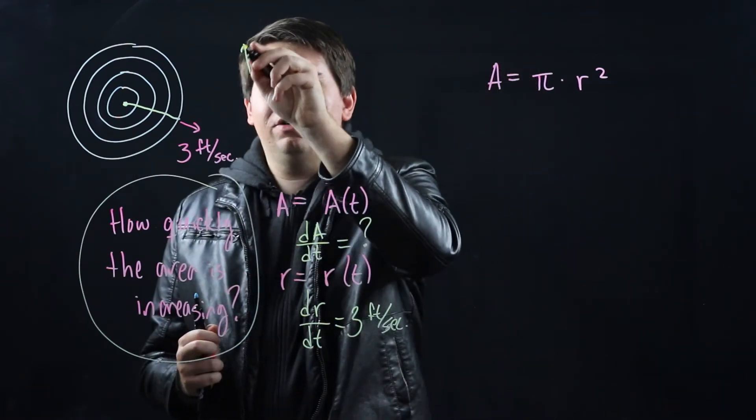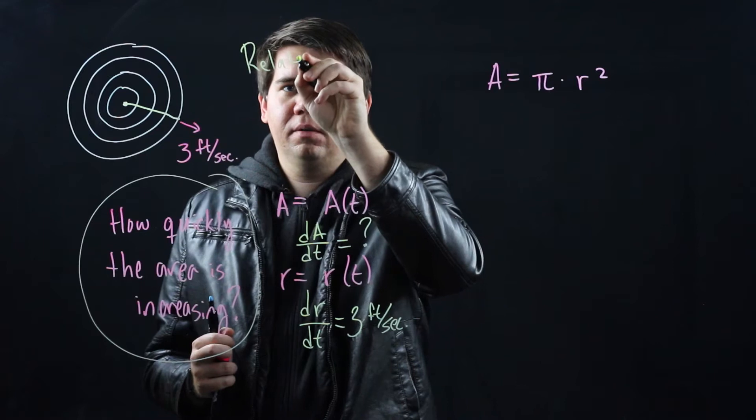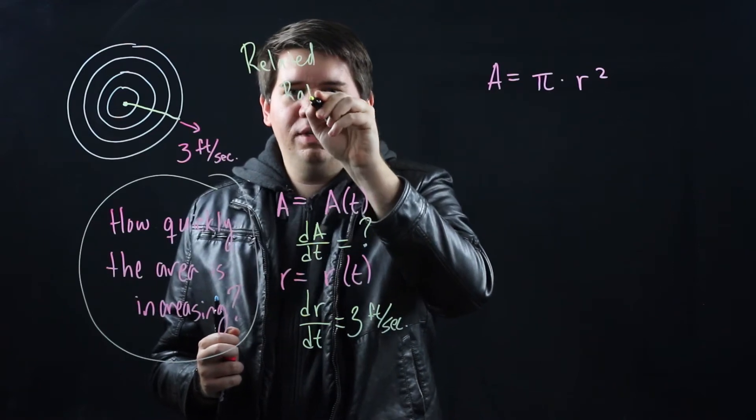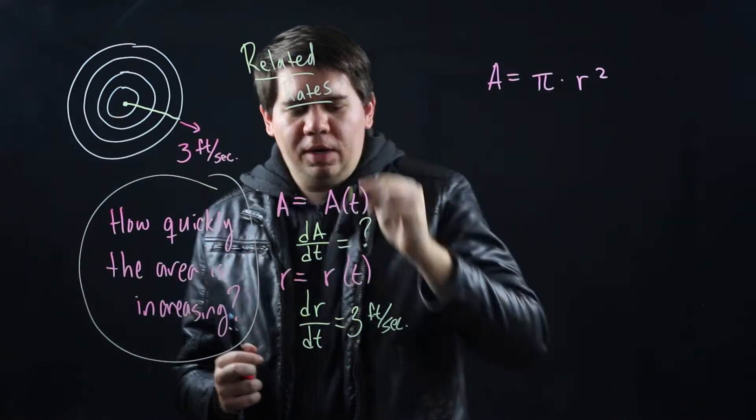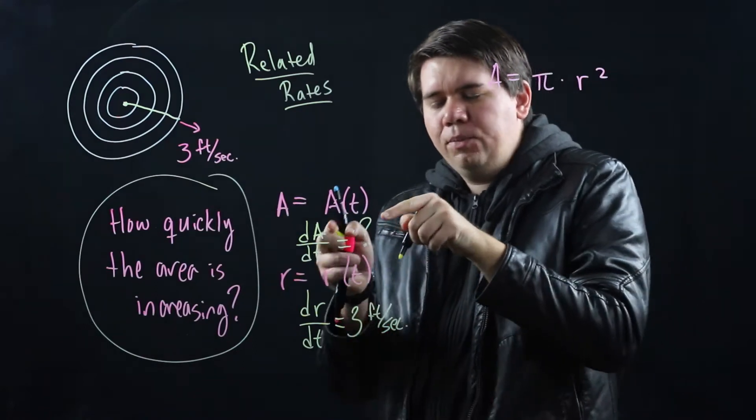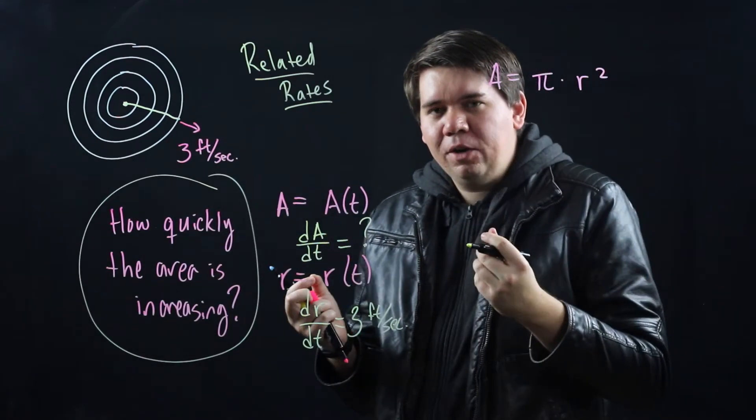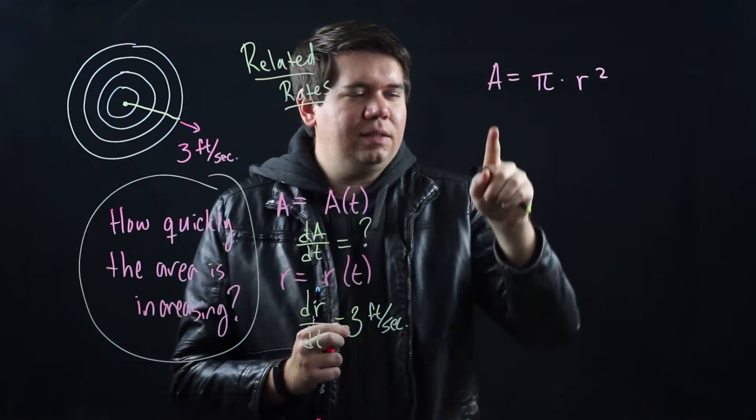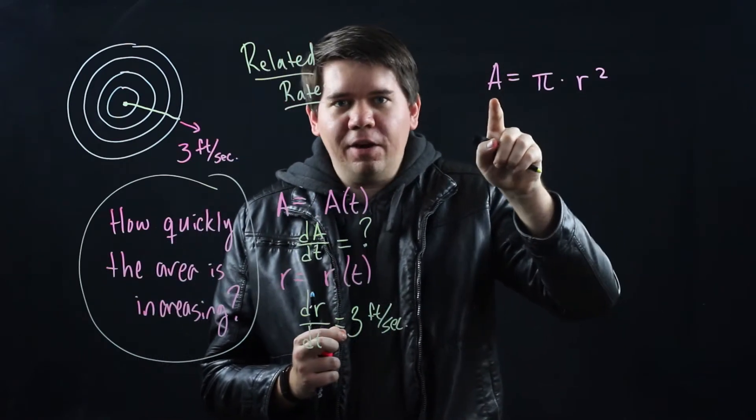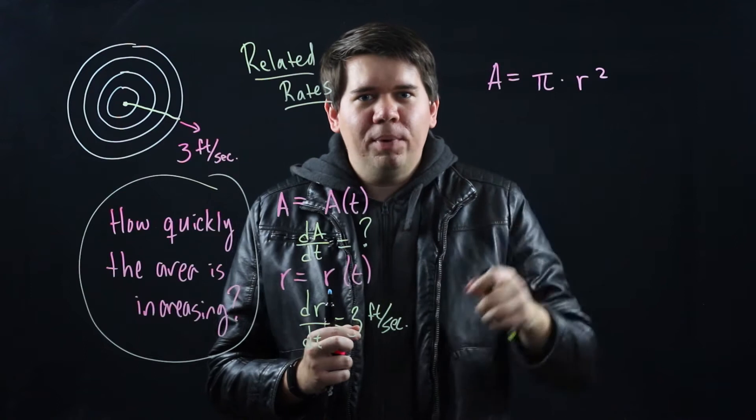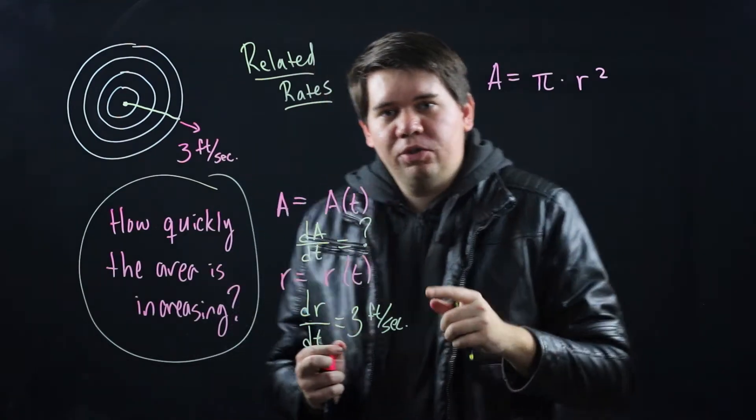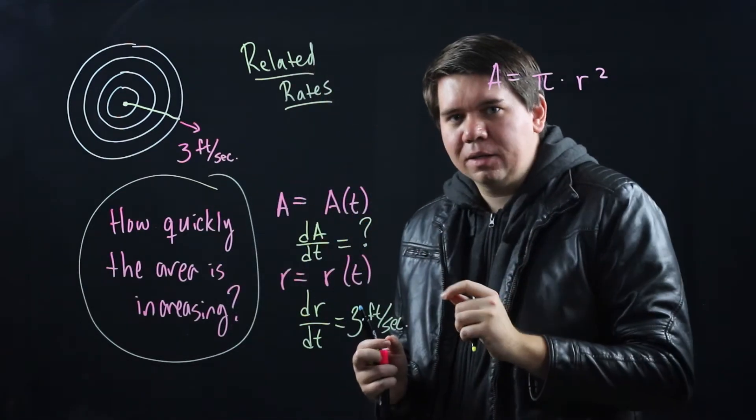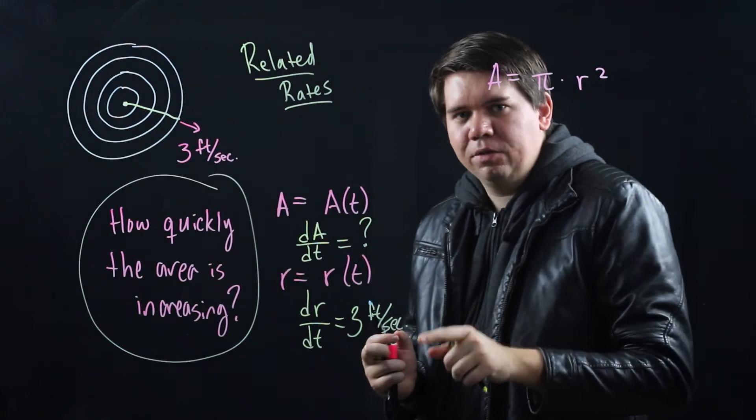This is called a related rates problem. We have two different rates of change. One of them we know, one of them we don't know, and we want to figure out a way of relating those. Now our formula here relates the A with the r, the area with the radius. But how can we get a relationship between the derivative of the area and the derivative of the radius?